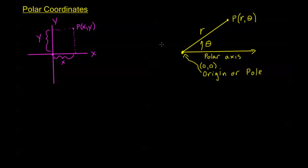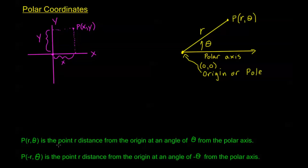Now, in terms of negative and positive values of R — we say that P(R, theta) is the point R distance from the origin at an angle of theta from the polar axis. If we have a negative R, we say P(-R, theta) is the point R distance from the origin at an angle of negative theta from the polar axis.